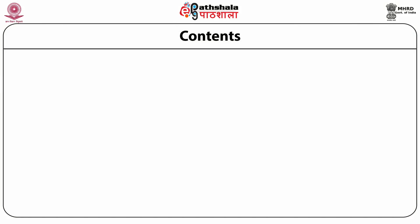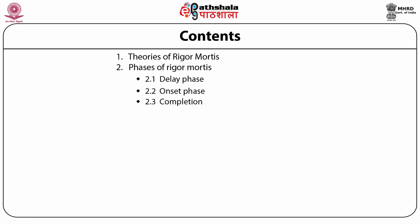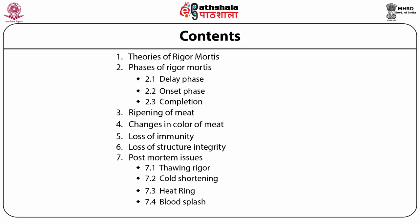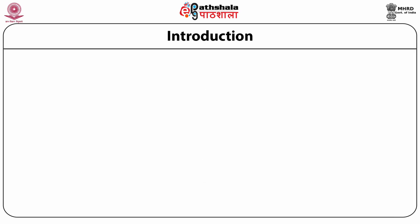In this module of post-mortem muscle chemistry we will discuss about the rigor mortis and aging of meat, for which various theories of rigor mortis have been postulated. The module covers: first, theories of rigor mortis; then the three phases — delay phase, onset phase, and completion of rigor mortis. Thereafter, ripening of meat, change in color of meat, loss of immunity, loss of structural integrity, and post-mortem issues like thaw rigor, cold shortening, heat ring, and blood splash will be discussed in detail.